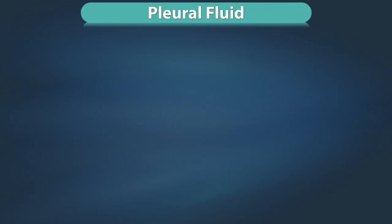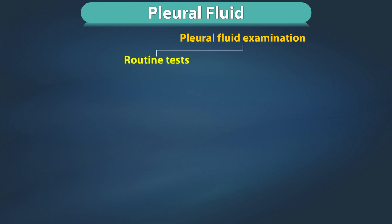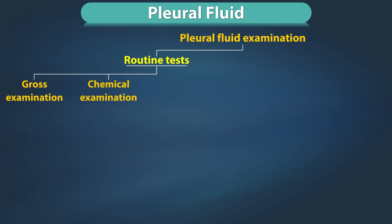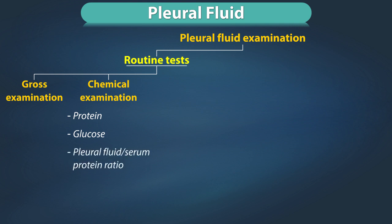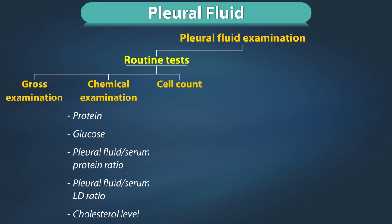Pleural fluid recommended tests include routine tests: gross examination, chemical examination including protein, glucose, pleural fluid to serum protein ratio, pleural fluid to serum lactate dehydrogenase ratio, and cholesterol level. Cell counts including total and differential count, and cytology.